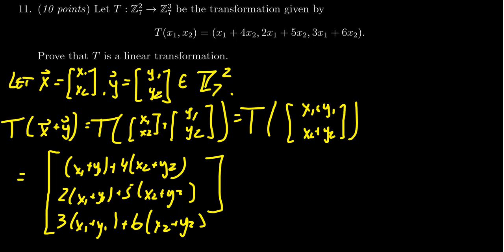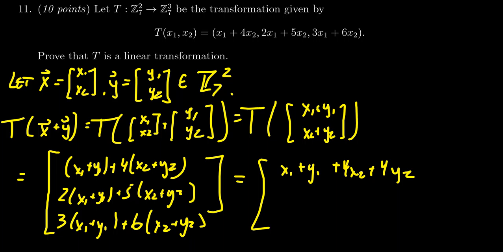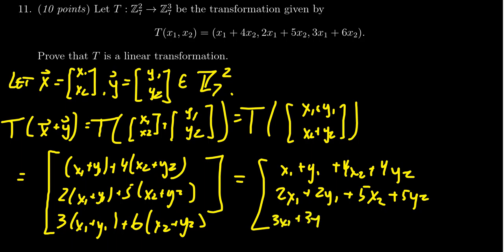That's what it means to evaluate the transformation at the input vector X1 plus Y1 and X2 plus Y2. Next, I'm going to distribute these coefficients. We end up with X1 plus Y1 plus 4X2 plus 4Y2, then 2X1 plus 2Y1 plus 5X2 plus 5Y2, and lastly 3X1 plus 3Y1 plus 6X2 plus 6Y2.